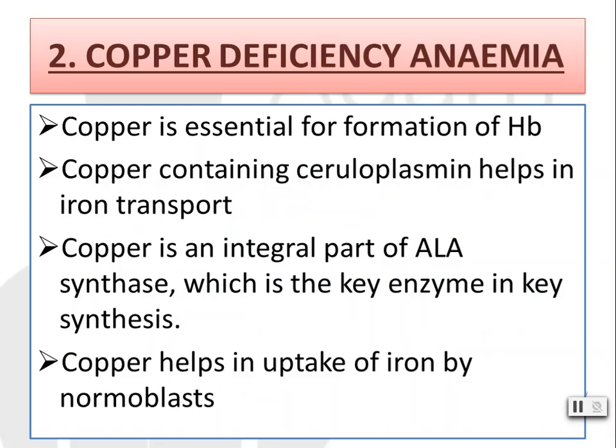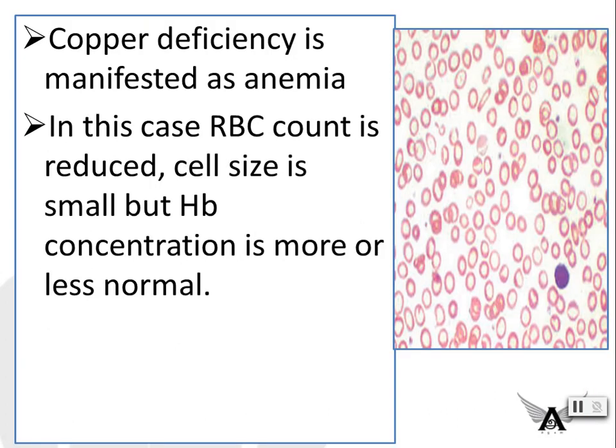The next deficiency is copper deficiency anemia. Copper is essential for the formation of hemoglobin. Copper-containing ceruloplasmin helps in iron transport, and copper is an integral part of ALA synthase, which is the key enzyme in heme synthesis. Copper helps in the uptake of iron by normoblasts. Copper deficiency is manifested as anemia — there will be a decrease in RBC count and cell size will be small, i.e., microcytic anemia, but hemoglobin concentration is more or less normal.